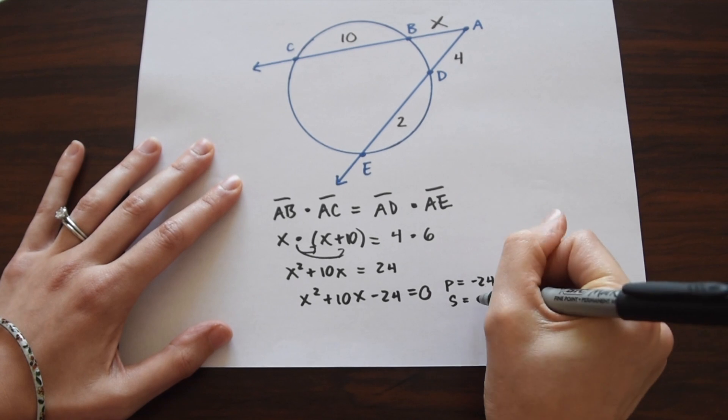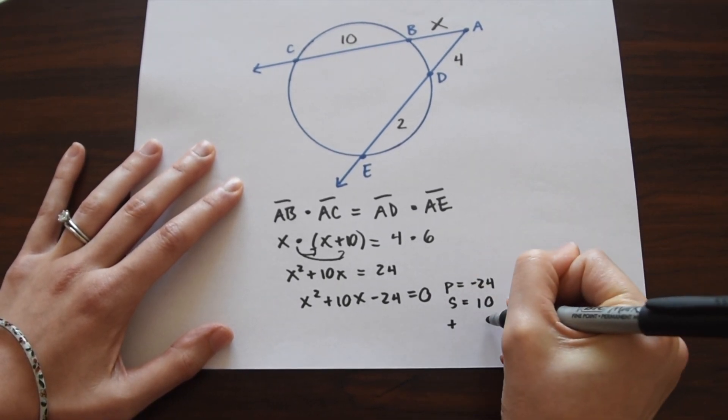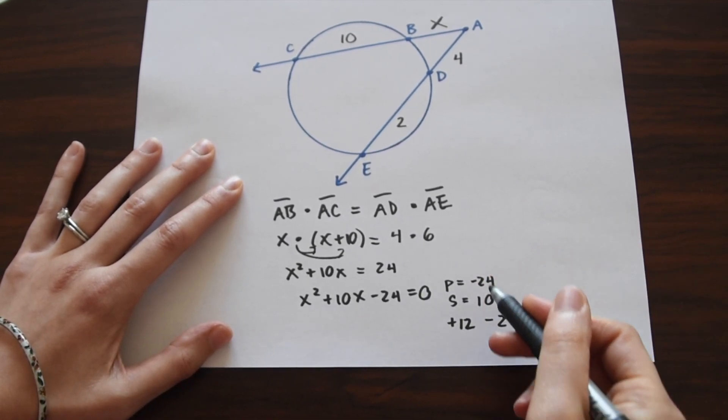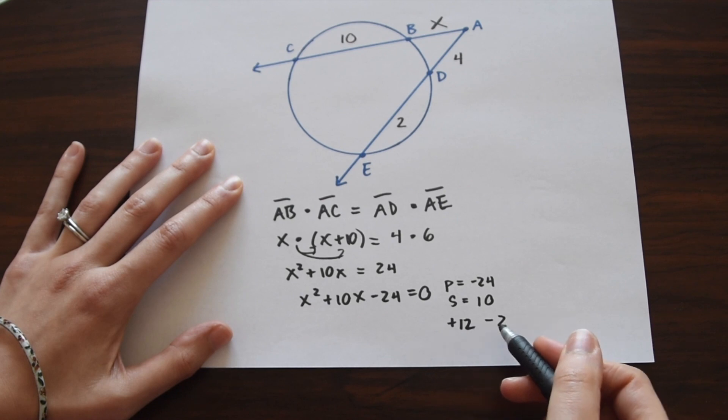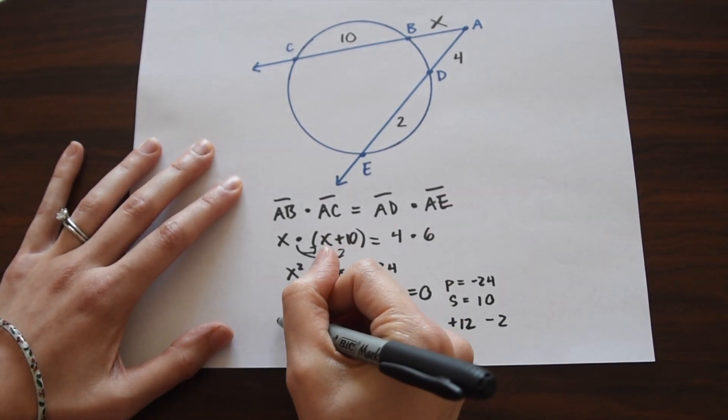So we have P, our product, is equal to negative 24. Our sum is equal to 10. And this factors really nicely. We get positive 12 and minus 2. Notice 12 times negative 2 is negative 24, and 12 minus 2 is 10.